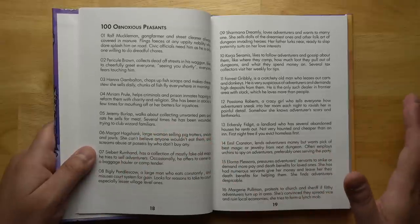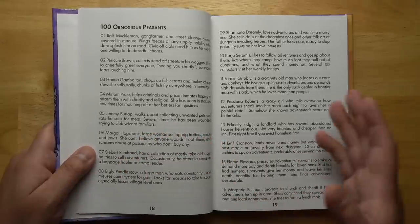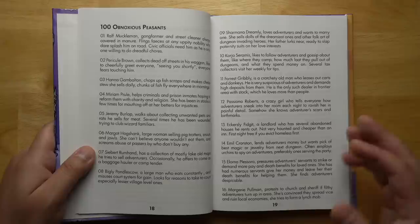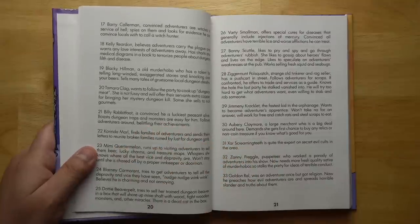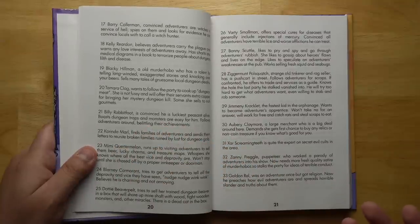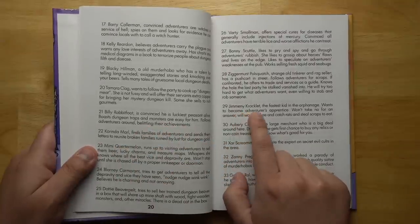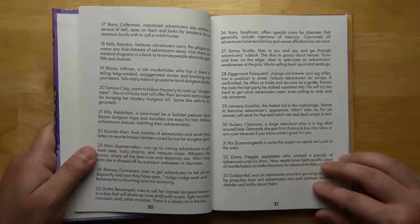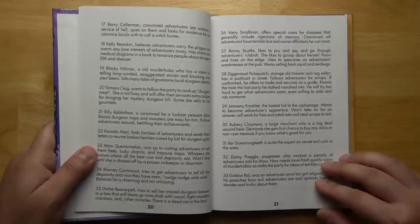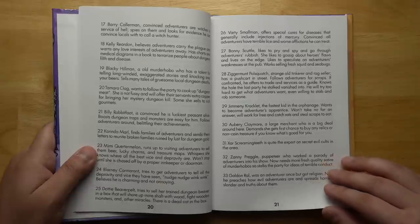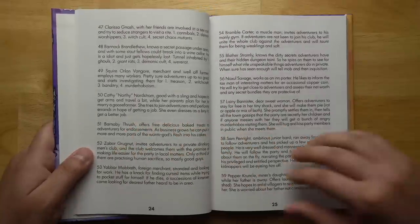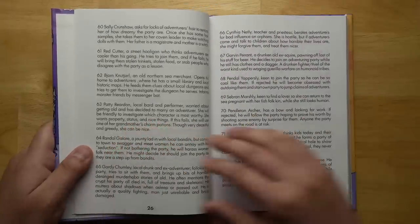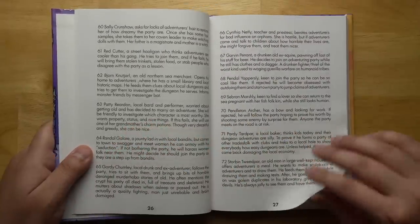There's lots of great random tables sprinkled throughout this book. For example, 100 obnoxious peasants, all of which are really great and flavorful. Let's pick one at random. Kemeny Cracklet, the fastest kid in the orphanage, wants to become an adventurer's apprentice. Won't take no for an answer. Will work for free and catch rats and steal scraps to eat. Just great little punchy descriptions full of flavor that will be very memorable for your players.